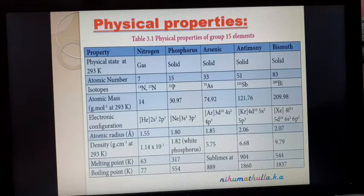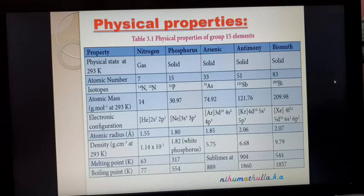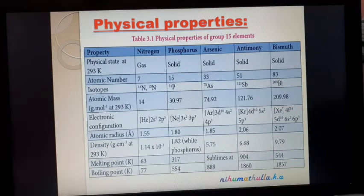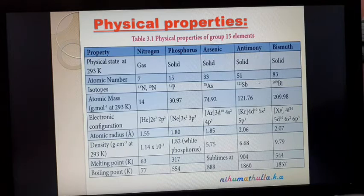The atomic number of nitrogen is 7. By knowing the atomic number of the first element, we can write the atomic numbers of the others by adding 8, 18, 18, 32 successively. So: 7 + 8 = 15 (phosphorus); 15 + 18 = 33 (arsenic); 33 + 18 = 51 (antimony); 51 + 32 = 83 (bismuth). The atomic numbers are 7, 15, 33, 51, 83.